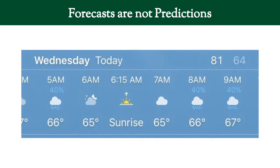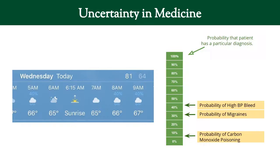So this is a forecast that I took from my phone, and you can tell this was not any time recently because it's not been 81 degrees for a while. But still, it's relevant. So at 8 a.m., there's a 40% chance of rain — that's what this forecaster said. And if at 8 o'clock it does not rain, was this guy wrong? No, he wasn't. This is a forecast, not a prediction. If it does rain, is he wrong? No. All we know is that there's a 40% chance of rain. He cannot say with certainty that it will rain or that it will not rain. With medicine, we have the same uncertainty.